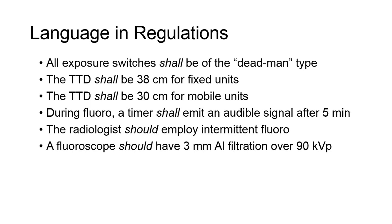A fluoroscope routinely operated above 90 kVp should have 3 mm of aluminum equivalency for filtration. Make sure when reading through these guidelines and regulations to take note of the should vs. shall notations.